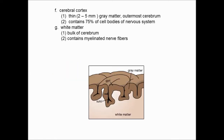The cerebral cortex itself is very thin — two to five millimeters, about 20% of a centimeter — but physiologically it is enormously significant. It's composed of cell bodies of the nervous system, and it's estimated that 75% of all cell bodies in the nervous system are in the cerebral cortex. It's layered across all the gyri and sulci to increase surface area. Beneath the cortex is the white matter, which makes up the tremendous majority of the cerebrum — that's where all the myelinated nerve fibers traveling to and from the cerebral cortex are found.